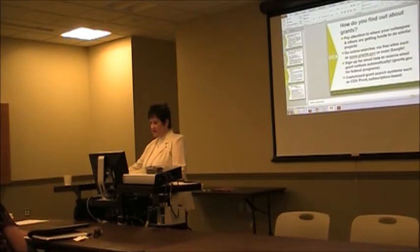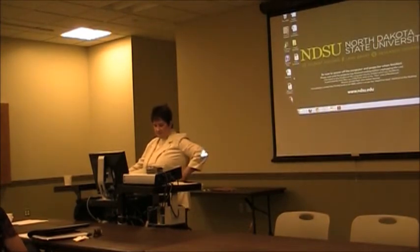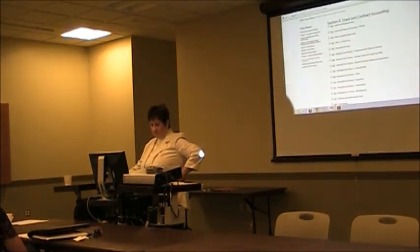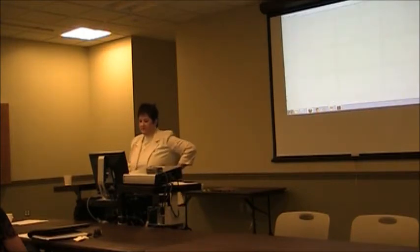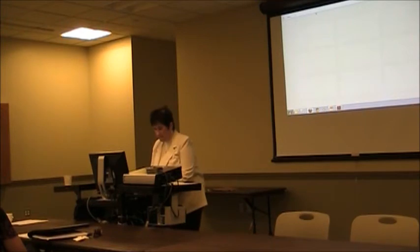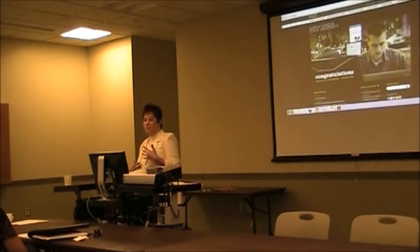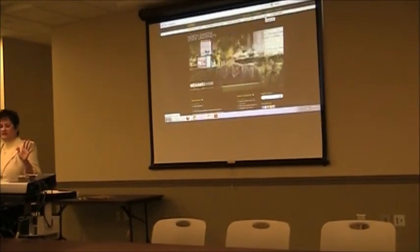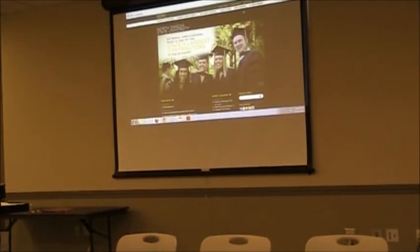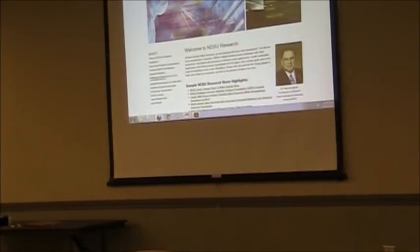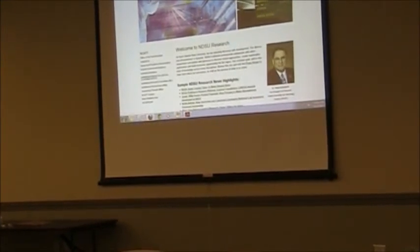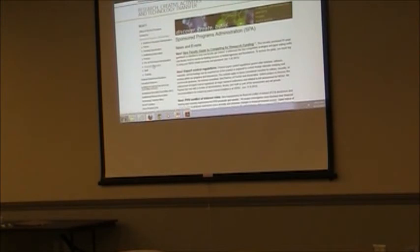So we're going to go out to Pivot. I should show you how to get to Pivot from our website. Here's NDSU's webpage. To get to the RCAT or the research office, the easiest way is up here on the white menu bar — if you click on 'Researchers,' this is our website. You can see there are some menu options here for finding funding opportunities, forms, and so on. Over here on the left, the one I want to point to is Sponsored Programs Administration — that's our group here today that's talking about how to get through the grants process.